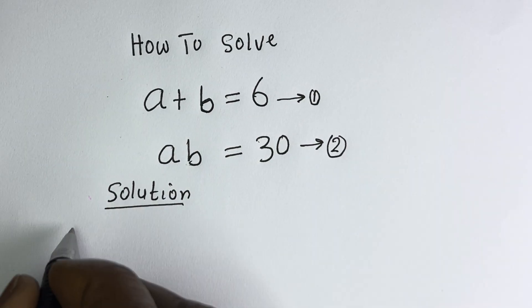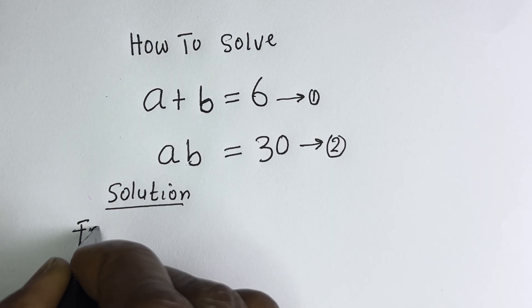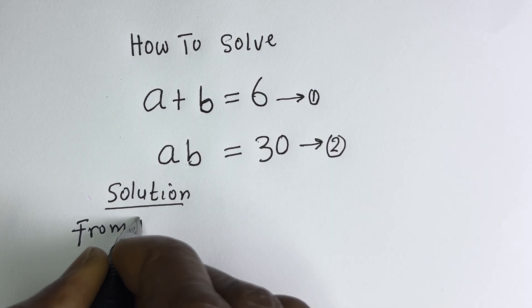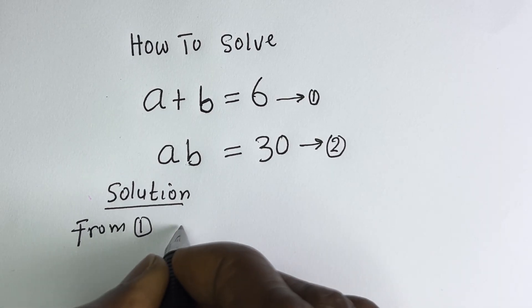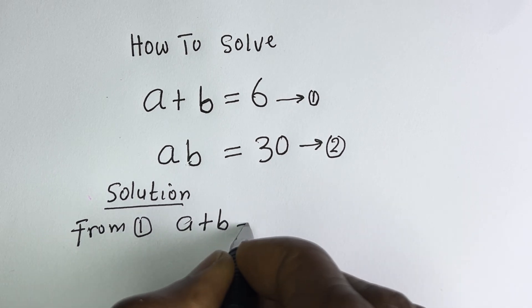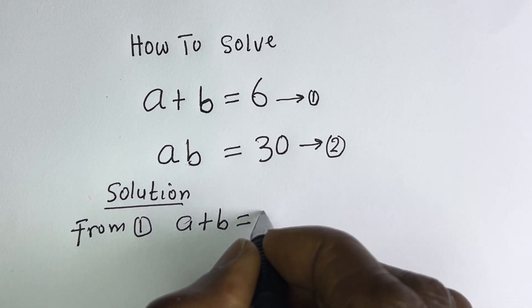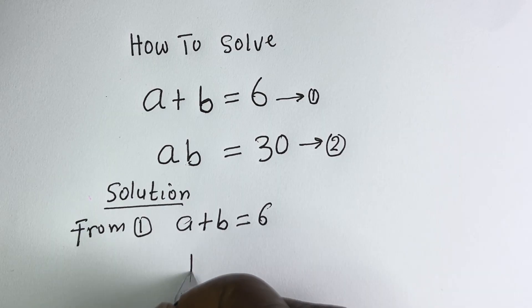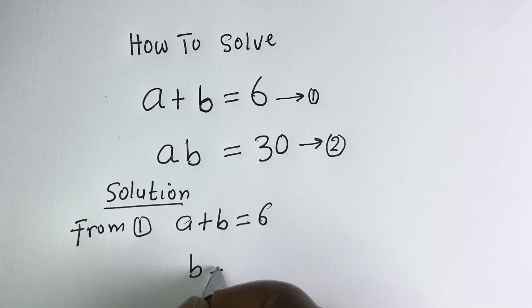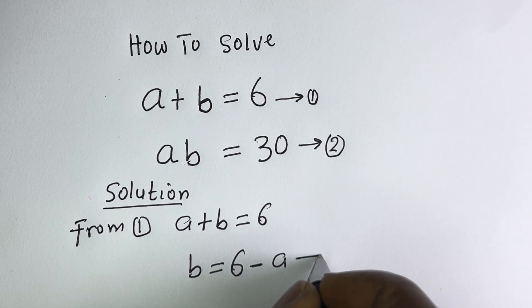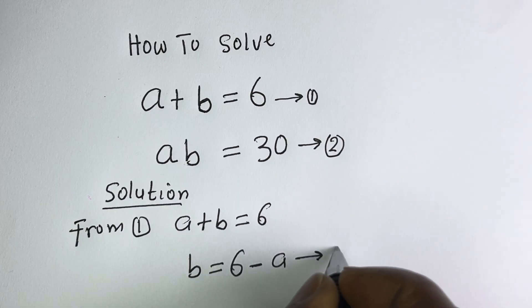From equation 1, A plus B is equal to 6, so B is equal to 6 minus A. Let's call this equation 3.